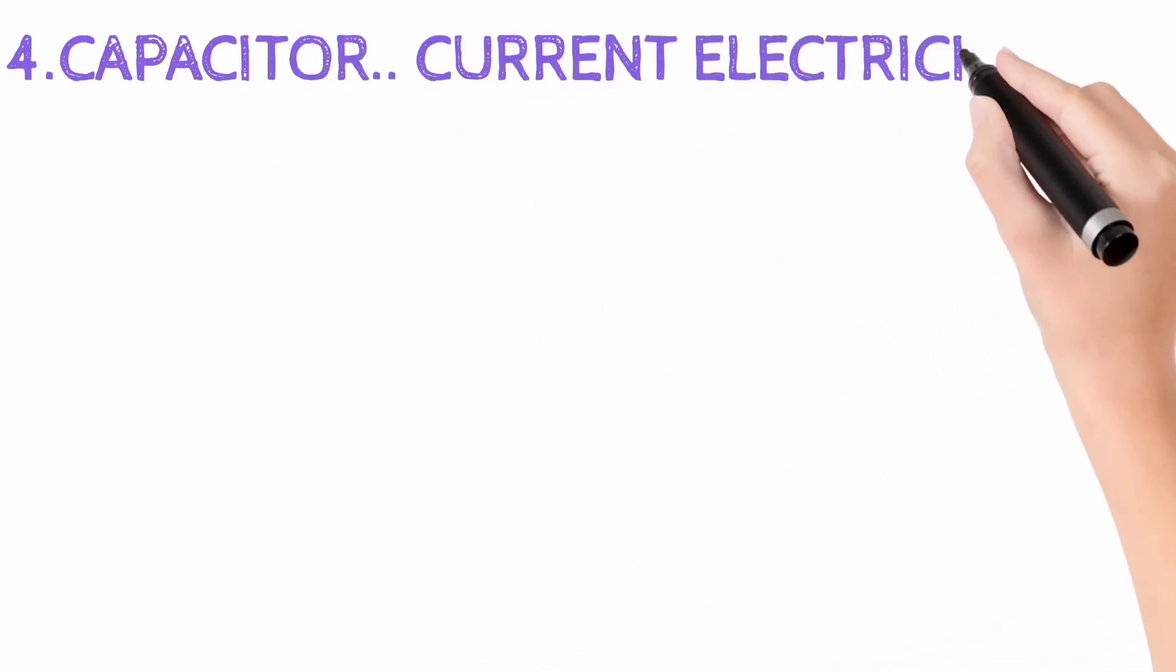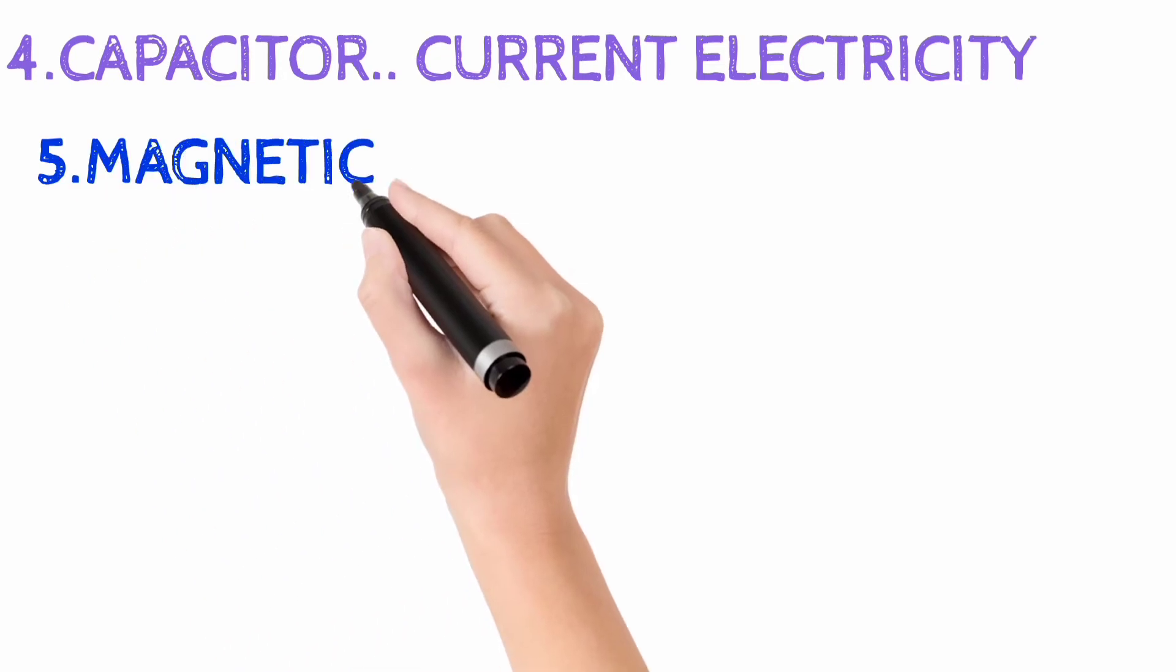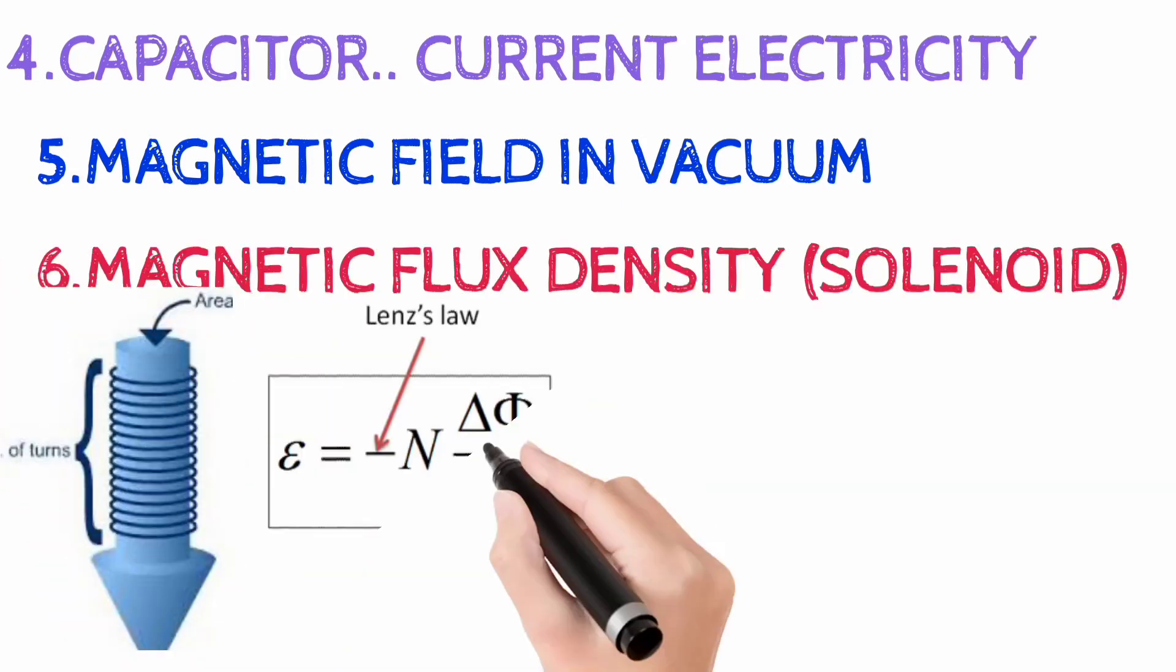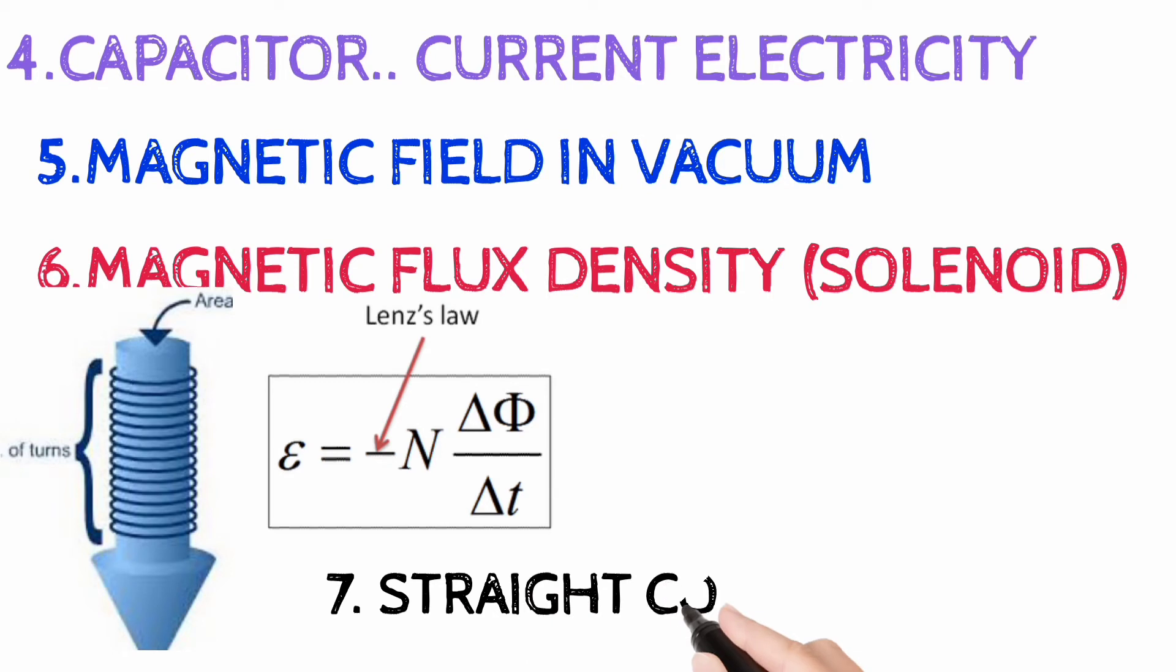4: Capacitor Current Electricity. 5: Magnetic Field in Vacuum. 6: Magnetic Flux Density Solenoid. You can see the formula there. 7: Straight Conductor.